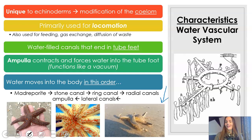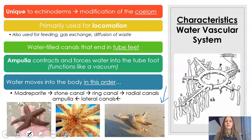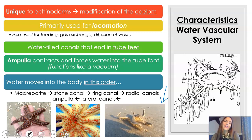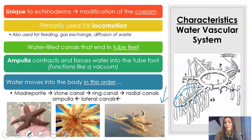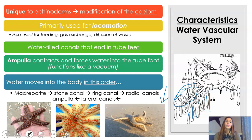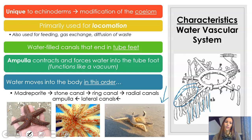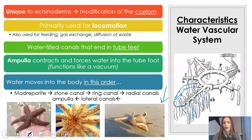What it is specifically is these water-filled canals that end in tube feet. Within the sea star or other echinoderm, the ampulla — it's like a little bulb — contracts and forces water into the tube feet, which are all those structures pointing down. It functions almost like a vacuum to suction to the surface so they can move.